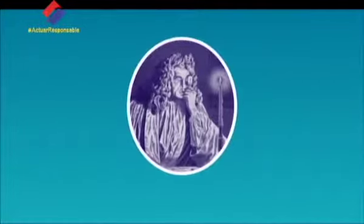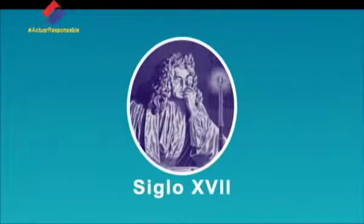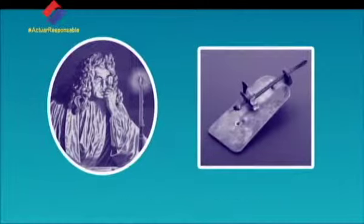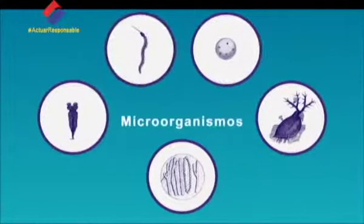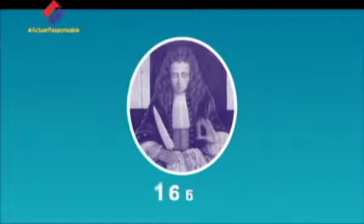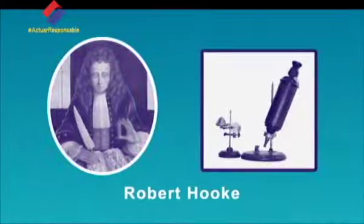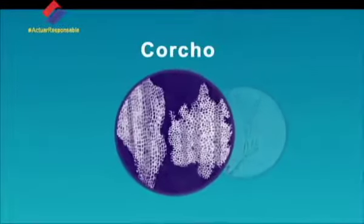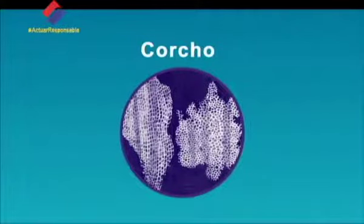Todo empezó con las primeras observaciones de las células en el siglo XVII, cuando Anton van Leeuwenhoek construyó el primer microscopio y logró observar en una gota de agua una gran cantidad de microorganismos formados por una célula, como los protozoarios. Posteriormente, en 1665, Robert Hooke analizó con su microscopio láminas muy finas de corcho y observó que este material estaba formado por un retículo de pequeñas celdas a las que denominó células.